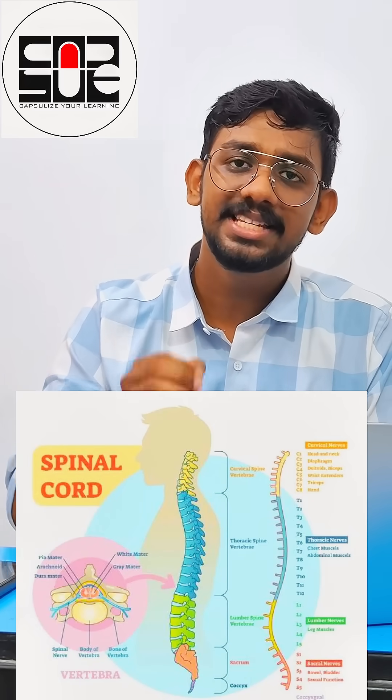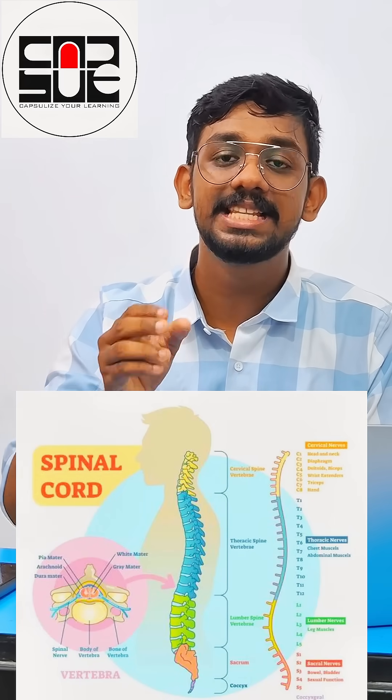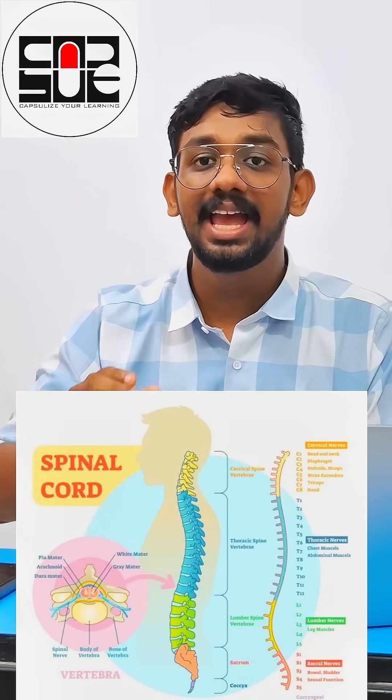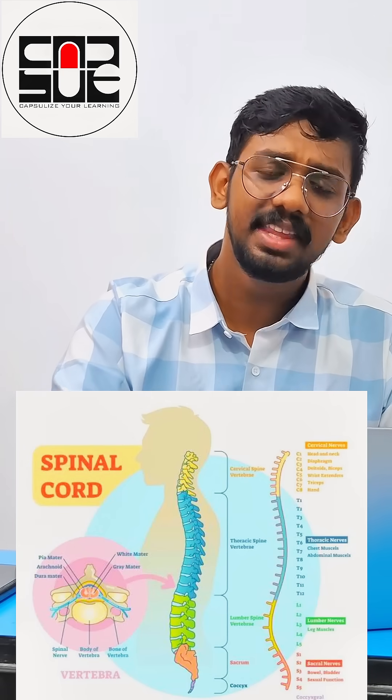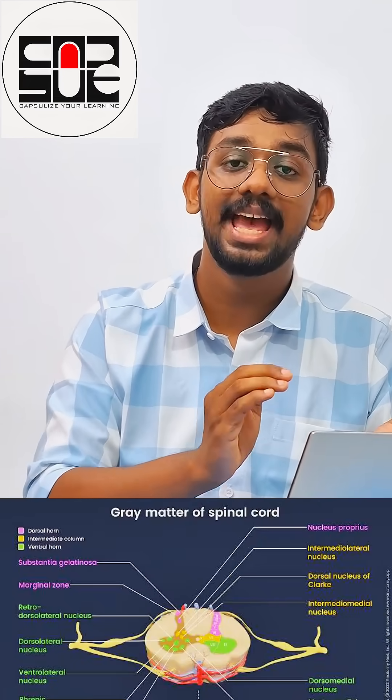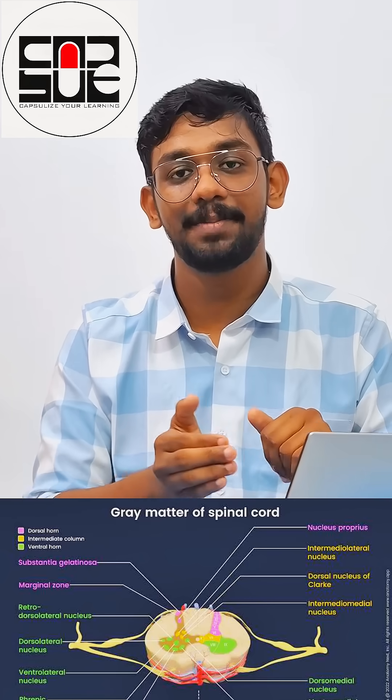Coming to the spinal cord basics: the structure is tube-like and it is protected by the vertebrae. Its function is to serve as a highway for signals between the brain and the body. It also includes grey matter as well as white matter. The grey matter includes neuron cell bodies, and the white matter includes myelinated axons.